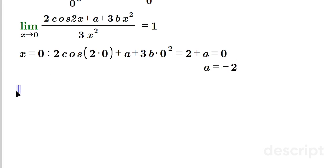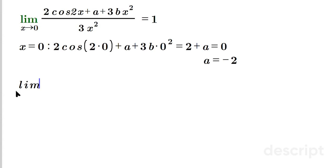We have found the value of a, so we can have the limit as x approaches 0, and then here we'll have 2 cosine 2x minus 2 now plus 3bx squared over 3x squared. If you try it you would have 0 over 0.